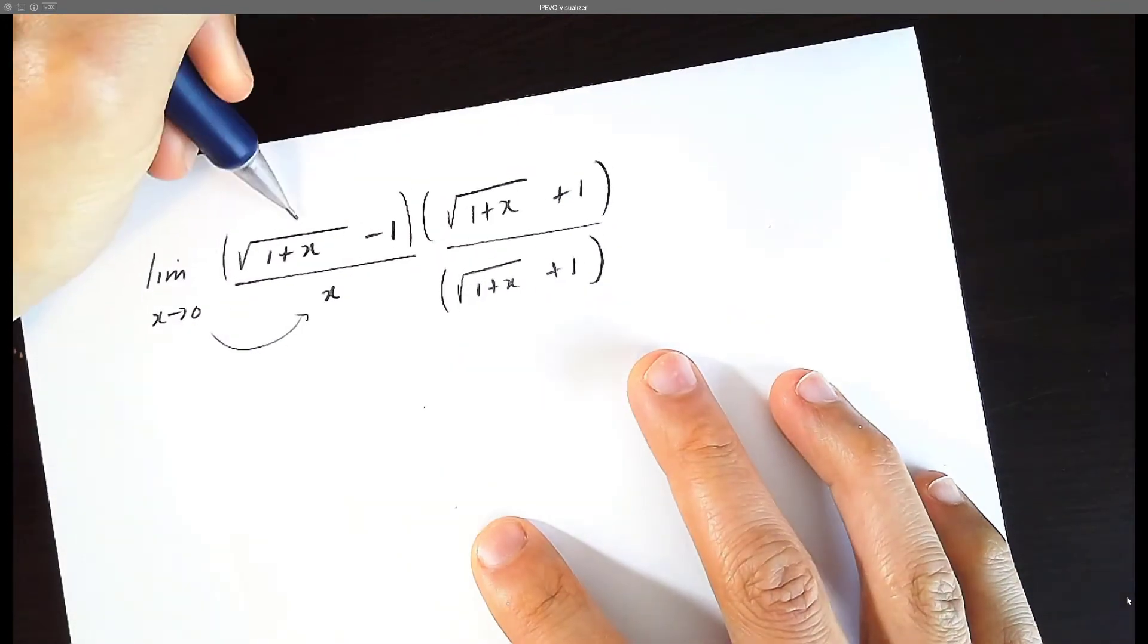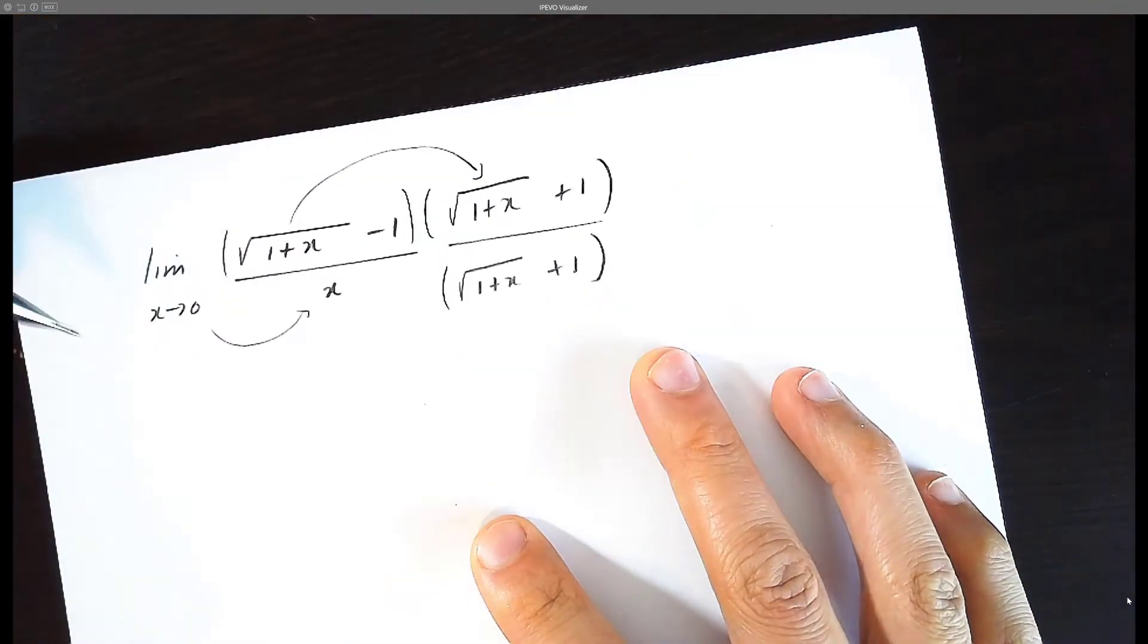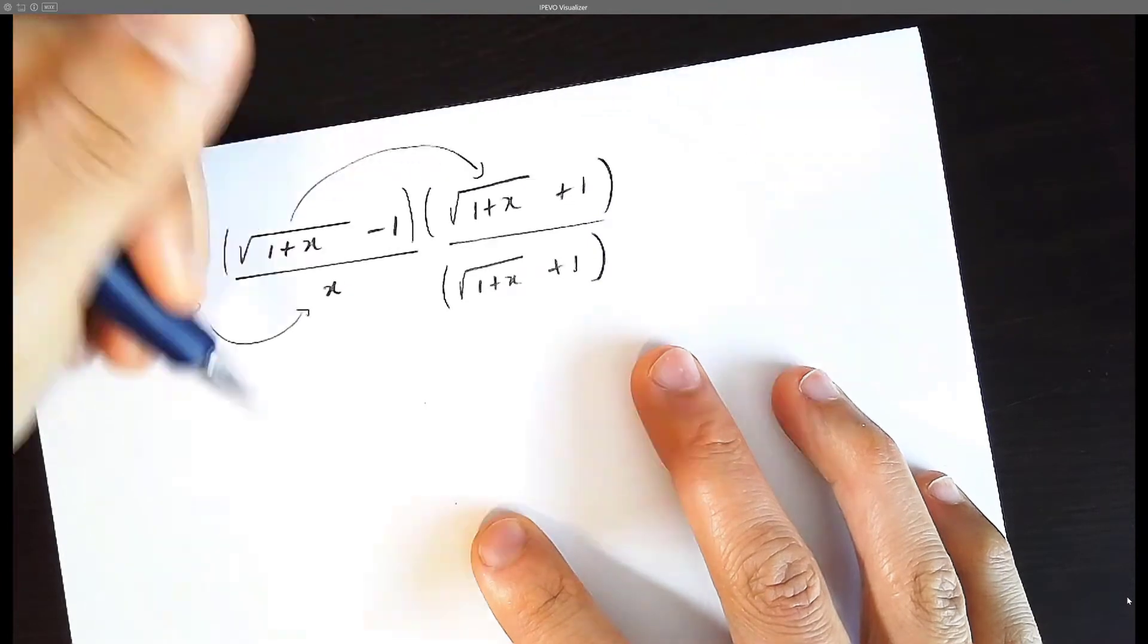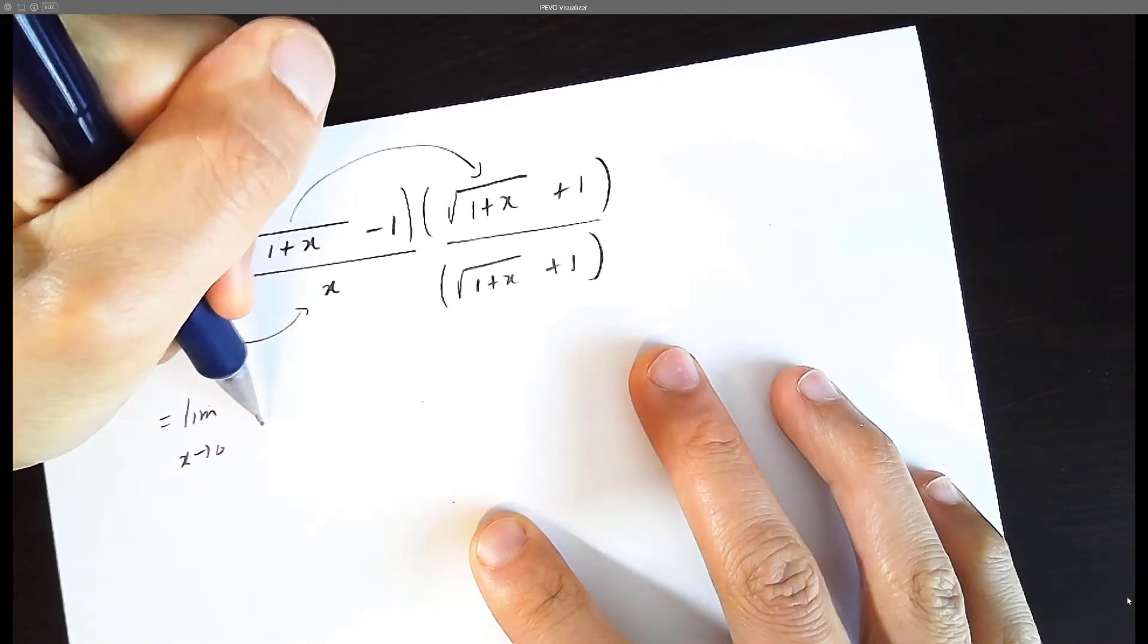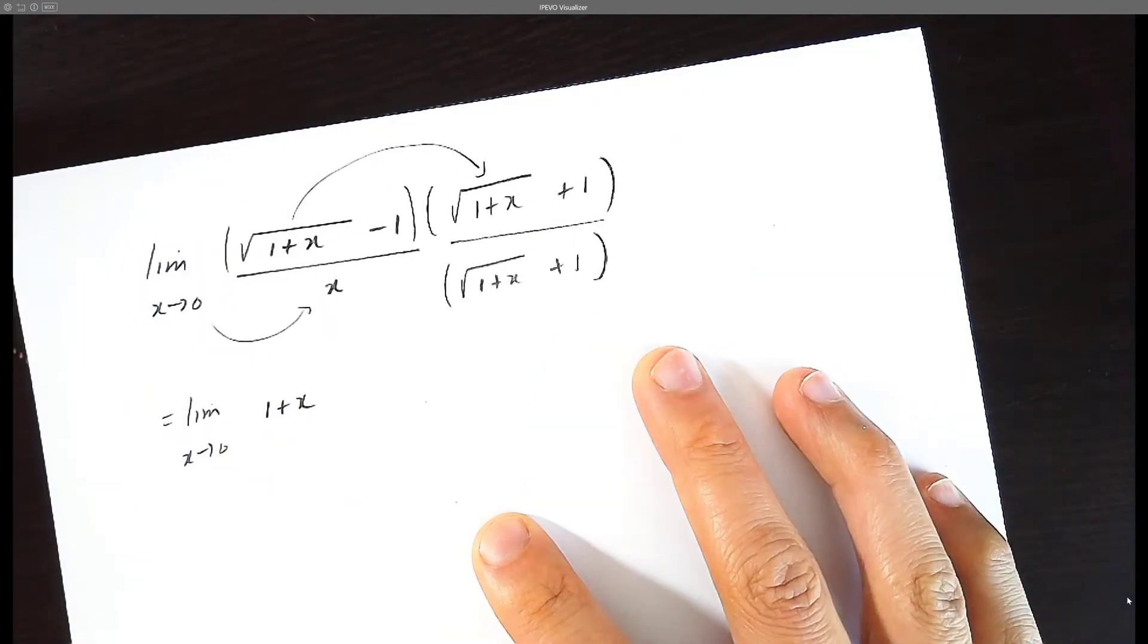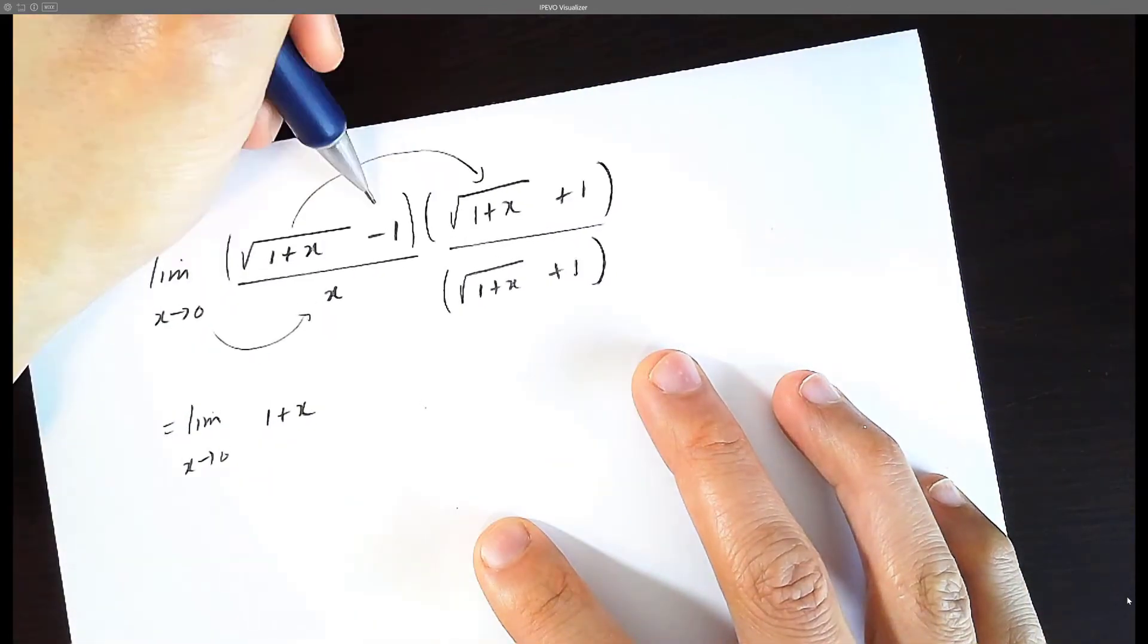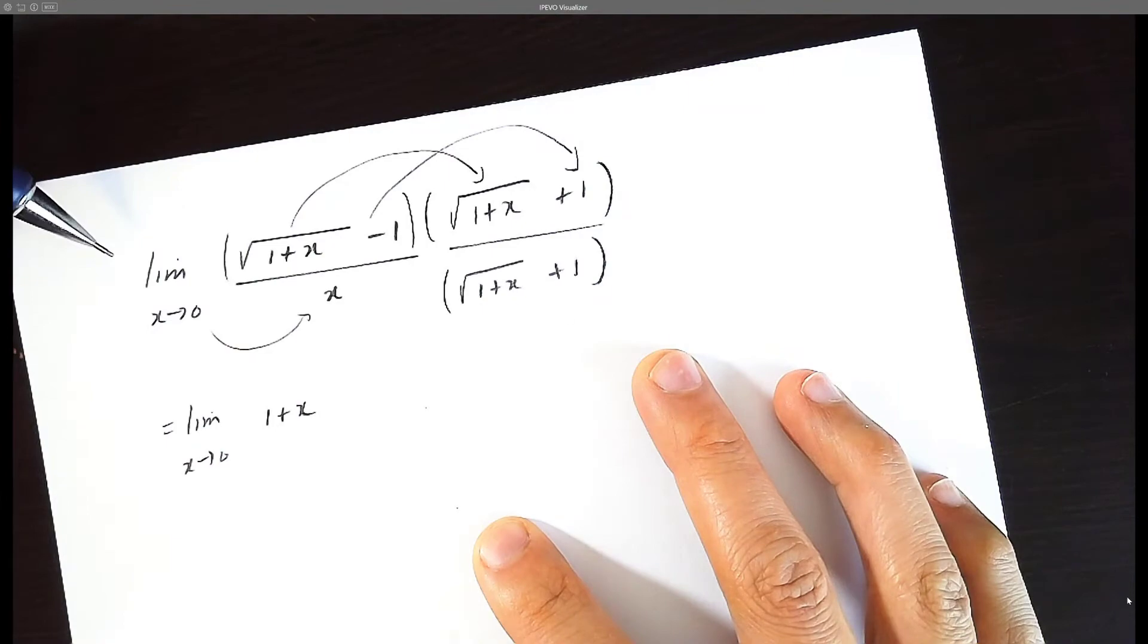And let's practice multiplying this out. So first times first, this is now just distribution. This times this is going to be the inside, which is one plus x. And then this is the difference of squares, you can just multiply this times this, it's going to be negative one.